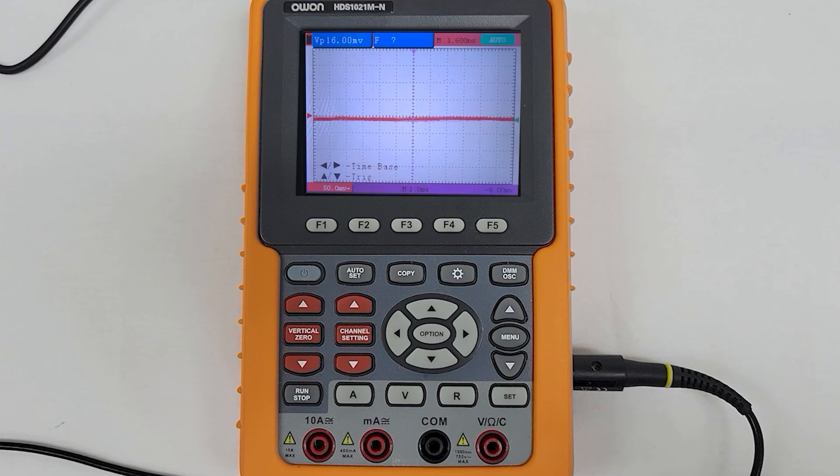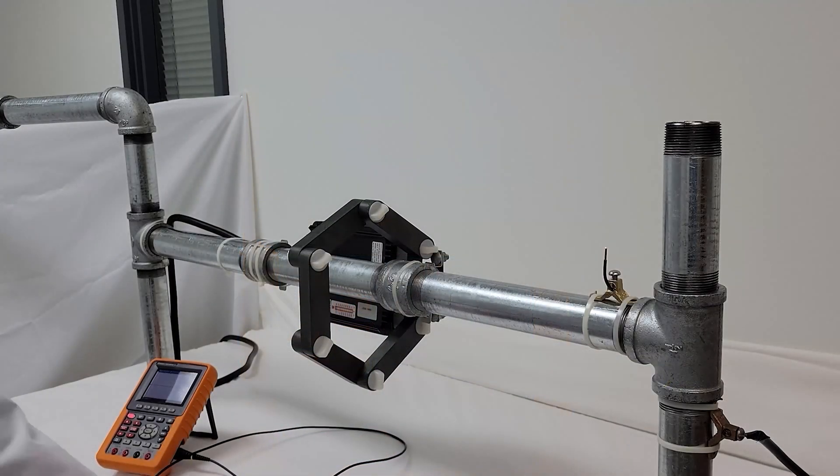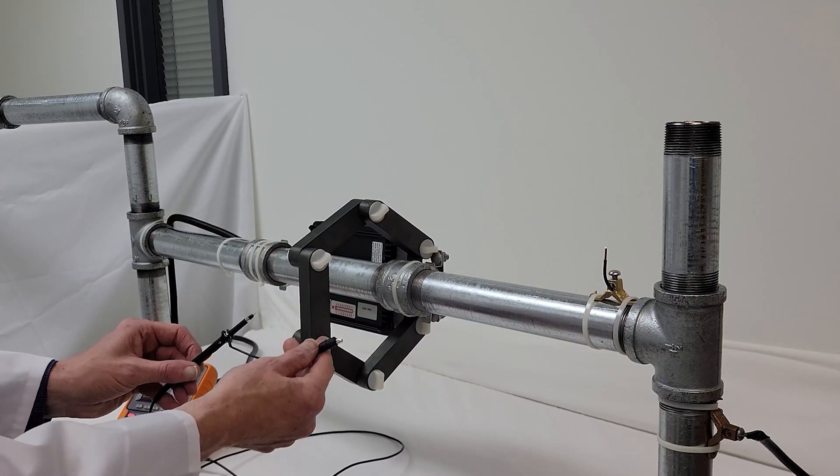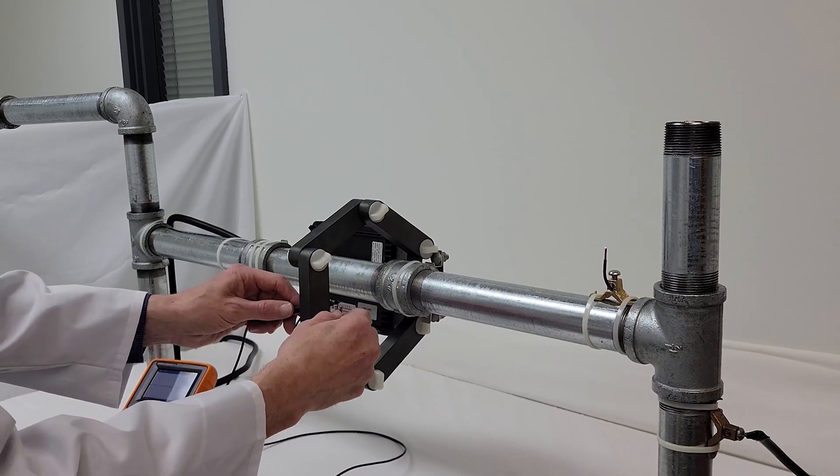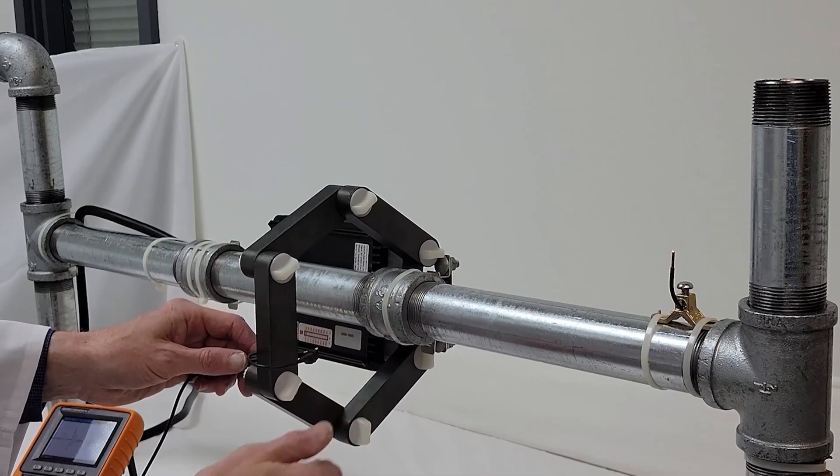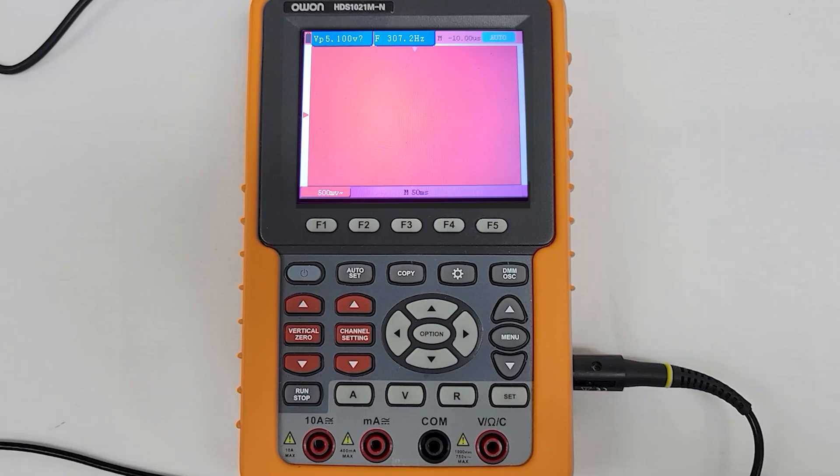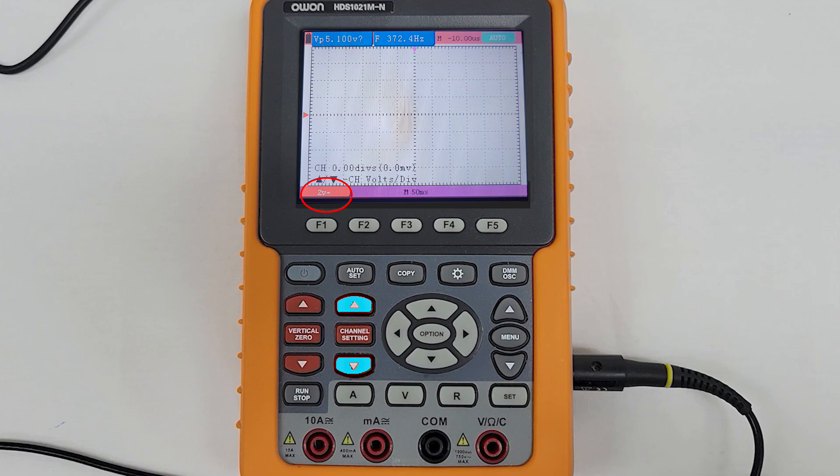Now that you have your Owen scope set up and ready to use, let's do a quick check by attaching the probe lead around the ferrites of a powered up HydroFlow unit. To zero in on the hydropath signal, you will need to press the up and down arrows of the channel setting button until 10V shows up in the bottom left red box.